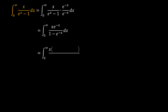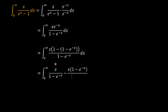We can re-express e to the power negative x in the numerator as 1 minus (1 minus e to the power negative x), so the 1s cancel and the negatives combine to give a positive, returning us to what we had. We then separate the two terms in the numerator, giving x over (1 minus e to the power negative x) minus x times (1 minus e to the power negative x) over (1 minus e to the power negative x). In the second term, the (1 minus e to the power negative x) factors cancel, leaving the integrand as x over (1 minus e to the power negative x) minus x.